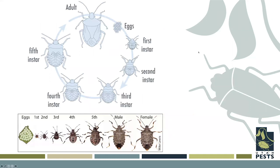The stink bug is a hemimetabolous insect — one that does not go through complete metamorphosis. Stink bugs have nymphal stages, most of them five, that look somewhat like the adult stage. They go from the egg stage early in the year through small spider-like stages, and a lot of people think they look like spiders when very young. By the time they're adults, they have fully formed wings.